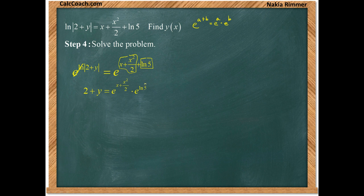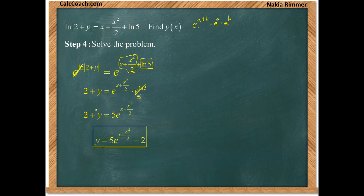Because these guys will cancel, it'll come down as a 5. And usually for constants, we put them out front. So the 5 comes down in front. And now we just subtract 2. The function y that satisfies that equation with that condition is 5e^(x + x²/2) - 2. And that's your answer.